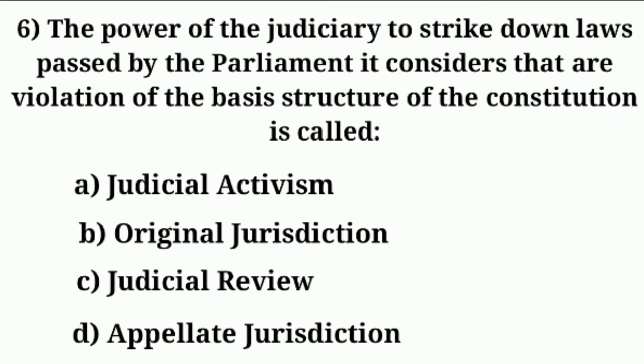Next, the sixth question. The power of the judiciary to strike down laws passed by the parliament, if it considers them a violation of the basic structure of the constitution, is called — answer options: A — Judicial activism, B — Original jurisdiction, C — Judicial review, and D — Appellate jurisdiction. The answer is judicial review.